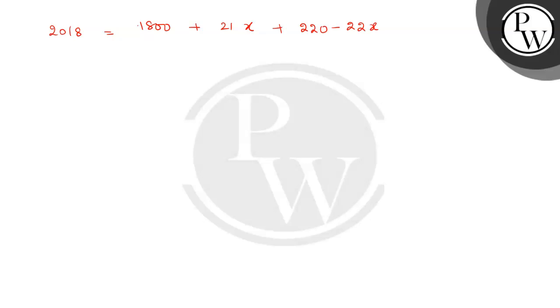So on solving, we get X is equal to 2020 minus 2018. This difference gives you X. So X is equal to 2%. This is our answer, X is equal to 2.